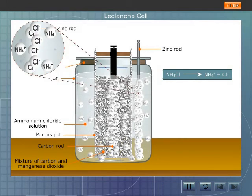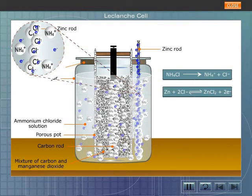The chloride ions transfer their electrons to the zinc rod, forming zinc chloride. The zinc rod attains negative charge due to excess of electrons. Thus, the zinc rod becomes the cathode, the negative electrode.